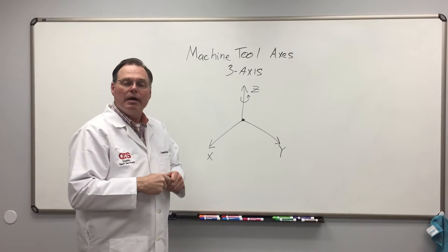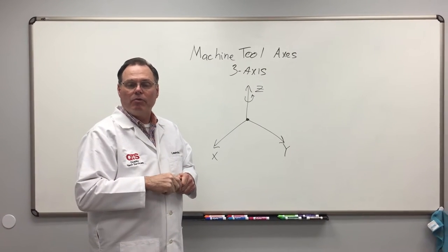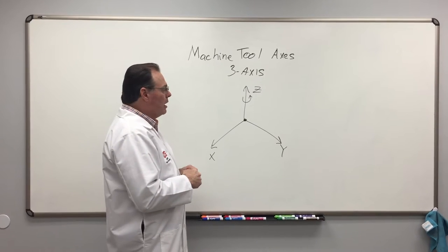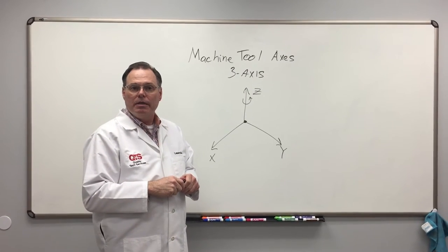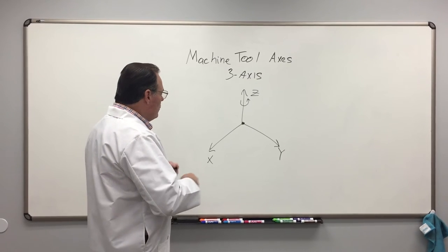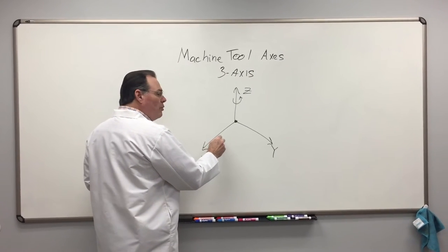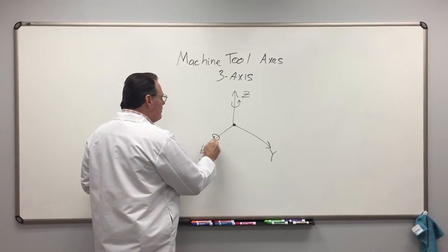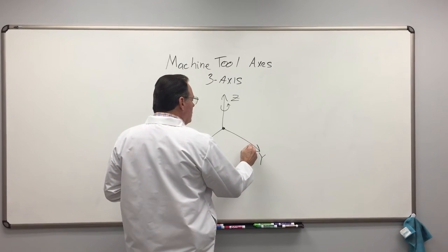Now there are other axes designations for rotary axes as well. Let's say you have a rotary table or a trunnion table on a machine. That is a rotational axis, so we could actually have a rotary axis along the x-axis or a rotary axis along the y-axis.